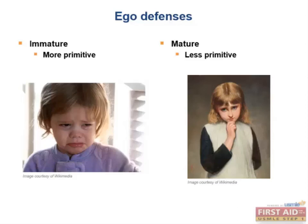Now let's talk about ego defenses. There are many different types of ego defenses, most of which may appear on your boards as they tend to be commonly tested concepts, so it's worthwhile to memorize these. If you're on the lookout, you'll also commonly see them displayed in people around you. Basically, these defenses are unconscious processes of the ego that are used to resolve inner conflict and manage social stress so that we can continue to function. Just like our bodies have homeostatic mechanisms to manage physical stress, think of these defenses as homeostatic mechanisms for our emotional and psychological states.